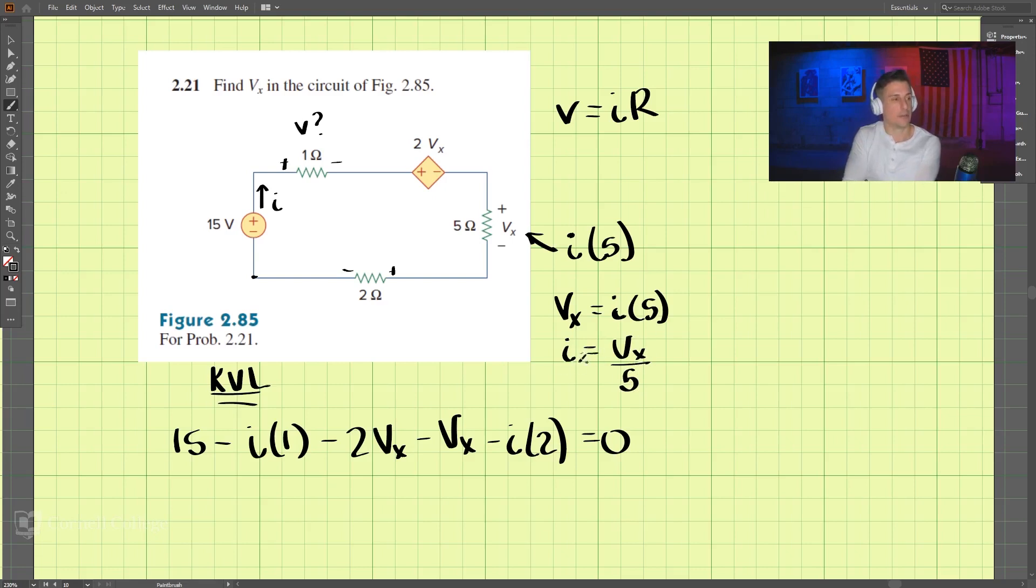I is equal to Vx divided by 5. So let's substitute this in for each of these. So we have 15 minus Vx divided by 5 times 1 minus 2Vx, that's 3Vx, minus Vx divided by 5 times 2 equals 0.